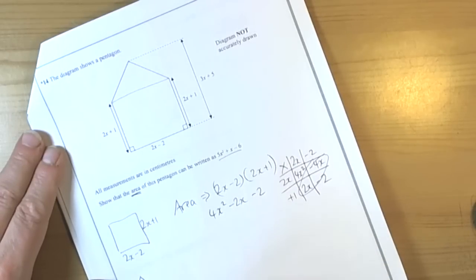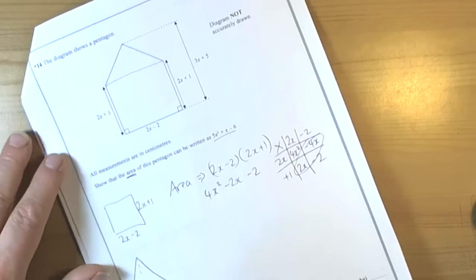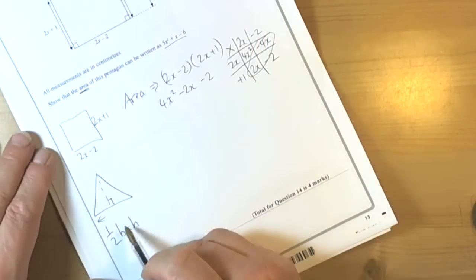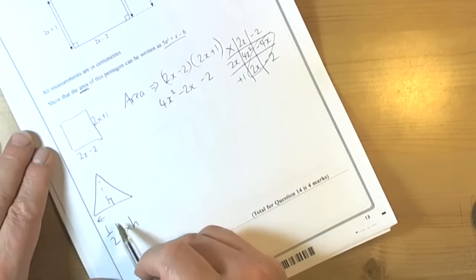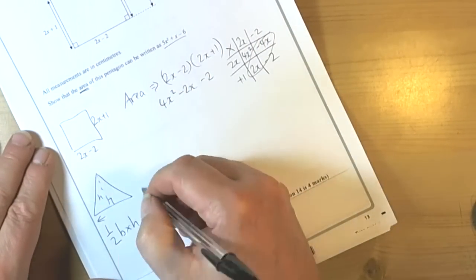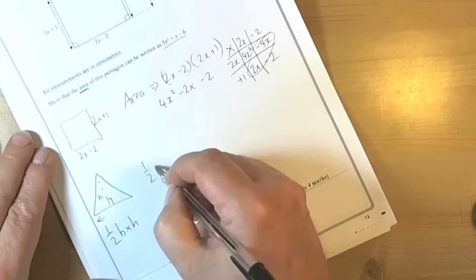The triangle, well we need to remember the formula for the triangle is a half the base times the perpendicular height. So the perpendicular height is that and the base length is across the bottom there. So we're remembering that the formula is a half base times height.